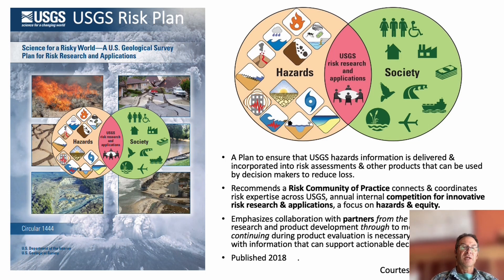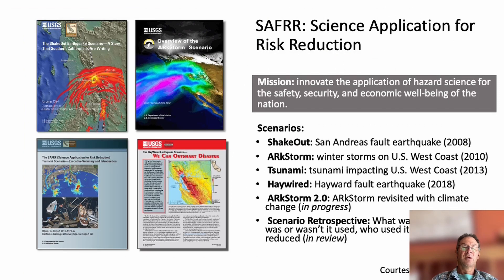'Science for a Risky World' — now called the Risk Community of Practice — evolved from an earlier group known as SAFRR, Science and the Application of Forecasts for Risk Reduction. That group produced a number of different scenarios, including ShakeOut, ARkStorm, and more recently ARkStorm 2.